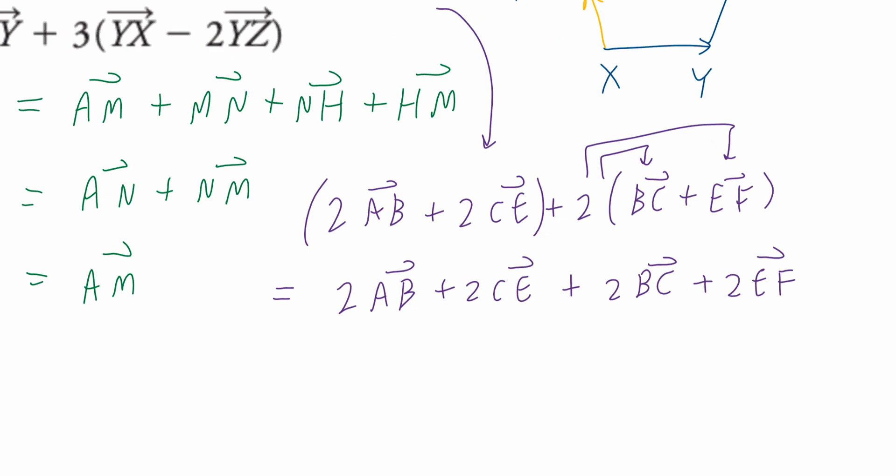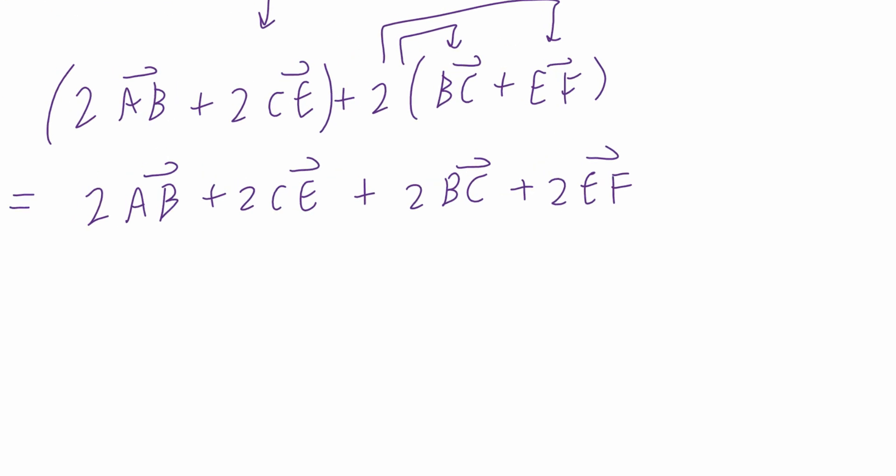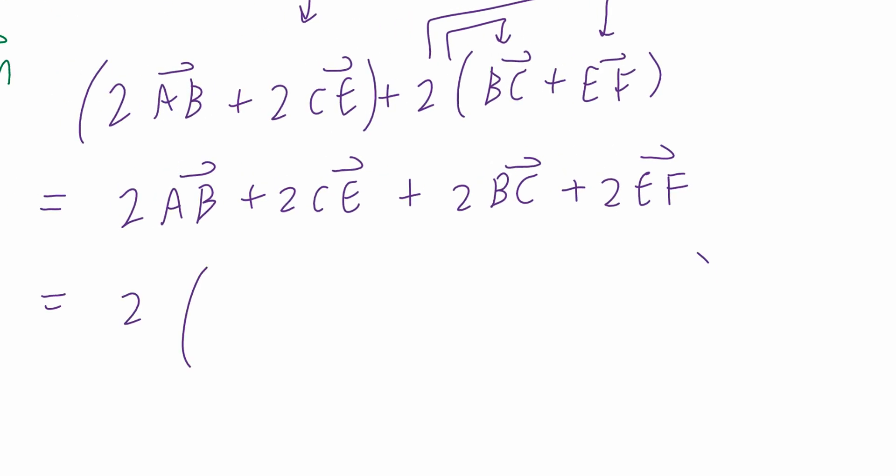Step number 2. The common factor of 2. So I'm going to bring 2 to the front, open a bracket here, and copy vectors AB plus vector CE plus vector BC plus vector EF. Now, we write this in such a way that you can simplify this. Open the bracket, vector AB. I'm going to copy BC next. And again, the reason is because there's B and B, which I can match in a moment.